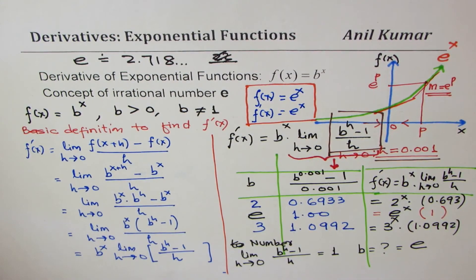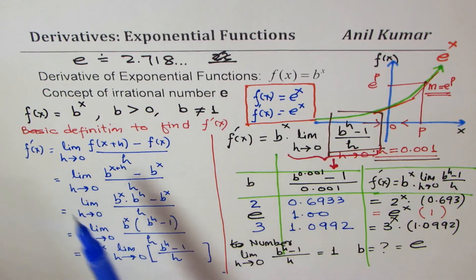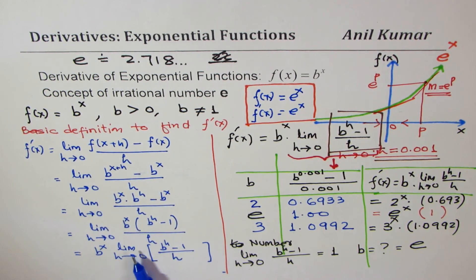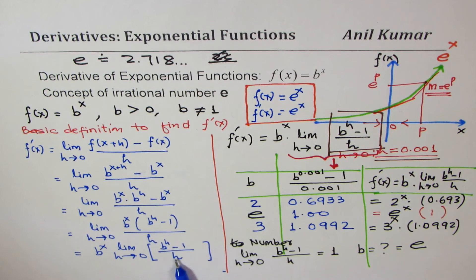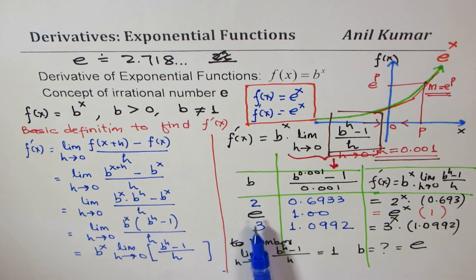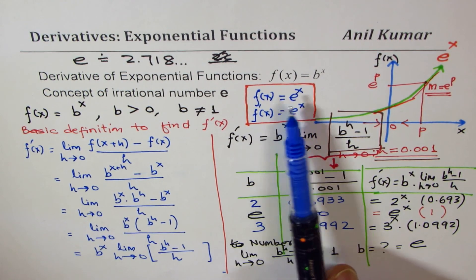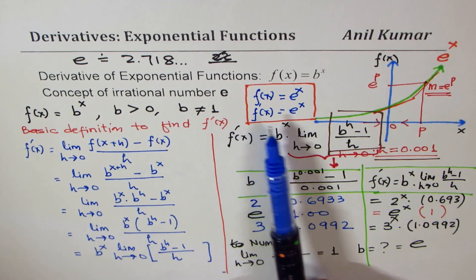To summarize what we learned: for any exponential function f of x equals b to the power of x, the derivative is b to the power of x times limit h approaches 0 of b to the power of h minus 1 over h. If b is 2 this limiting factor is less than 1; if b is 3 this factor is more than 1. E is such an irrational number whose value makes this limiting factor exactly 1, so the derivative of e to the power of x is e to the power of x.